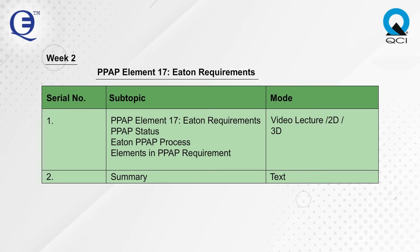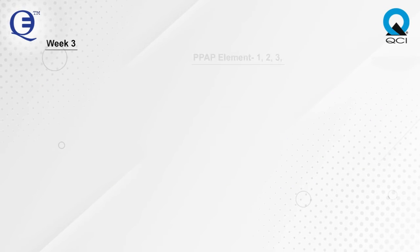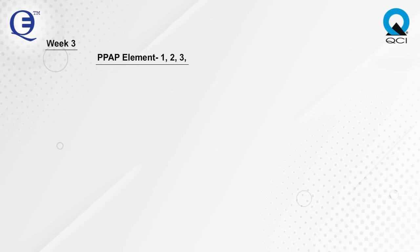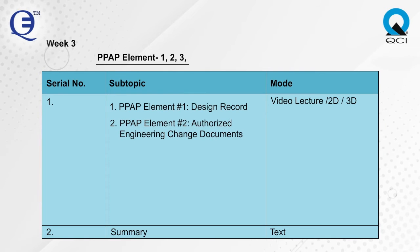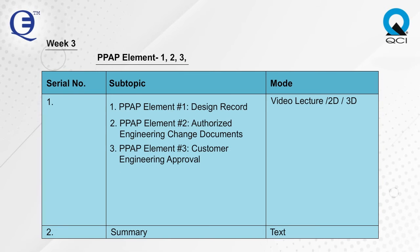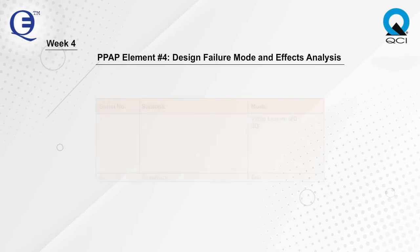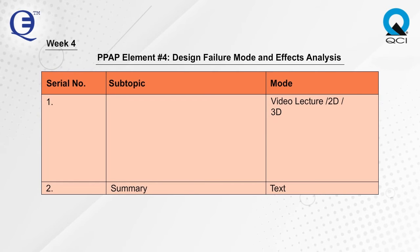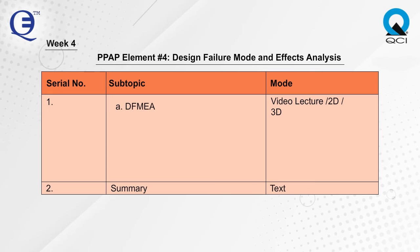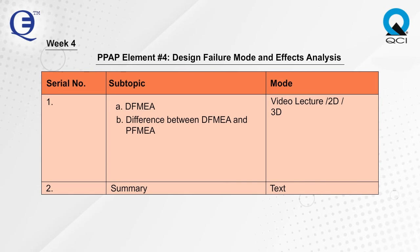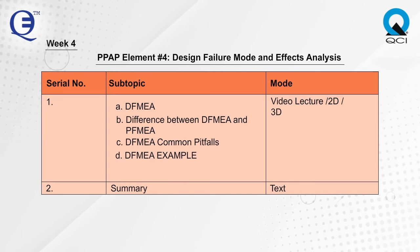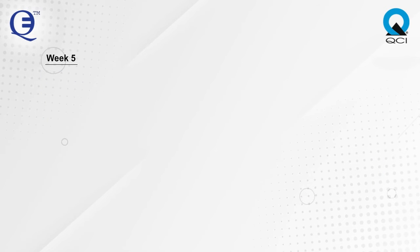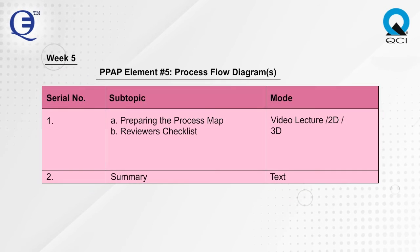Week 2 covers PPAP Element 17, Eaton requirements, PPAP status, Eaton PPAP process, and elements in PPAP requirements. Week 3 covers PPAP Elements 1, 2, and 3: Element 1 Design Record, Element 2 Authorized Engineering Change Documents, and Element 3 Customer Engineering Approval. Week 4 covers PPAP Element 4: Design Failure Mode and Effects Analysis (DFMEA), difference between DFMEA and PFMEA, DFMEA common pitfalls, and DFMEA example.